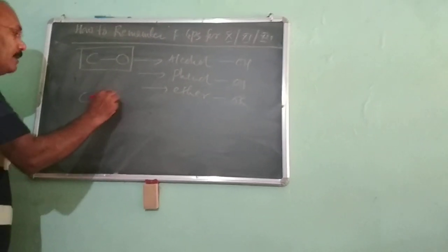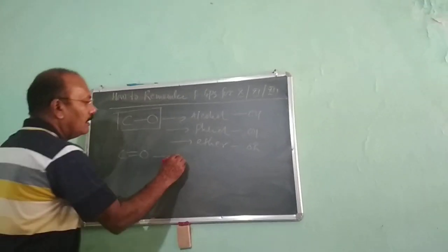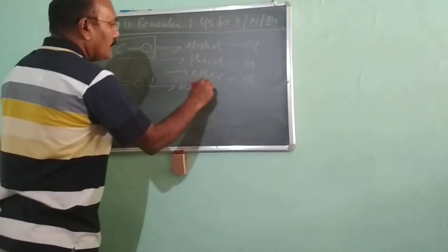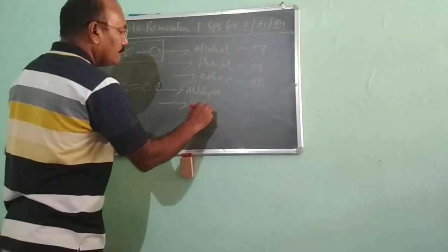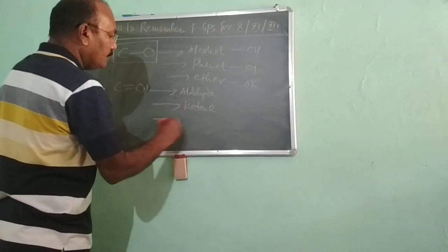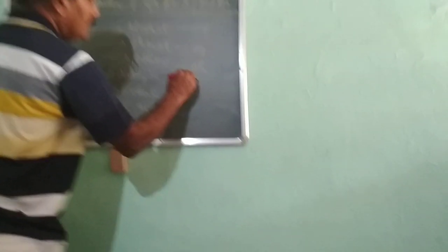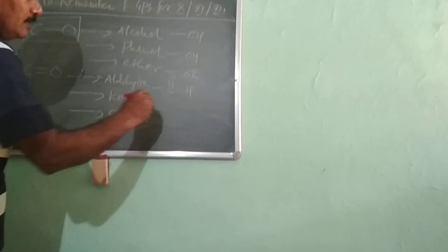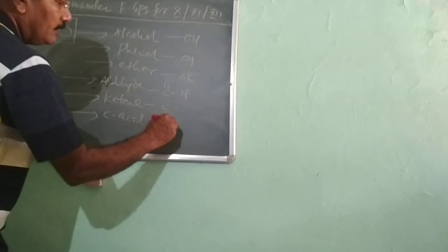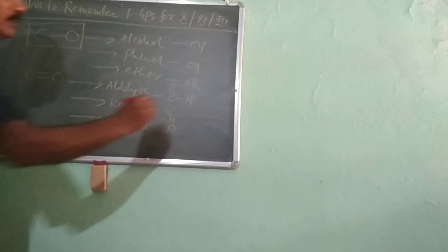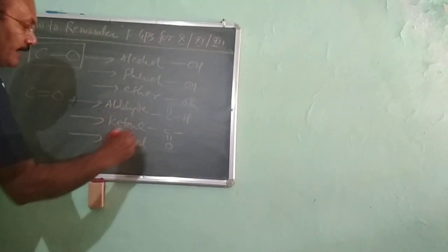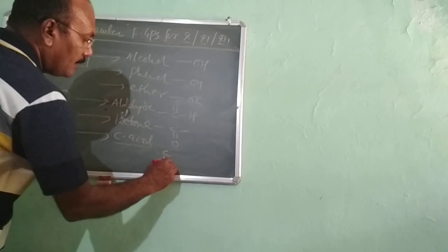Apart from that, carbon-oxygen double bond is important for aldehyde, ketone, and carboxylic acid. Aldehyde contains a carbon-oxygen double bond along with hydrogen. Ketone contains a carbon-oxygen double bond along with two alkyl groups on the left and right side. Carboxylic acid contains a carbon-oxygen double bond along with an OH group.